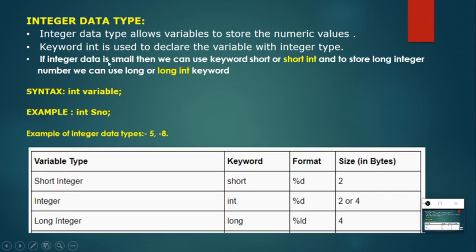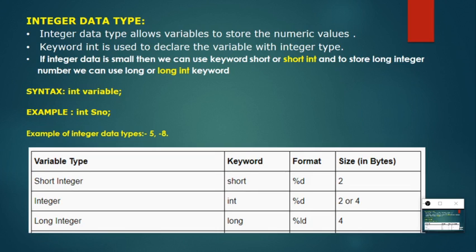When declaring an integer, we use the keyword int followed by the variable name — for example, int serial_number. If you have a small value, you can use short int or just short as the keyword. If your integer is very large in number, you can use long int, or just long as the keyword.